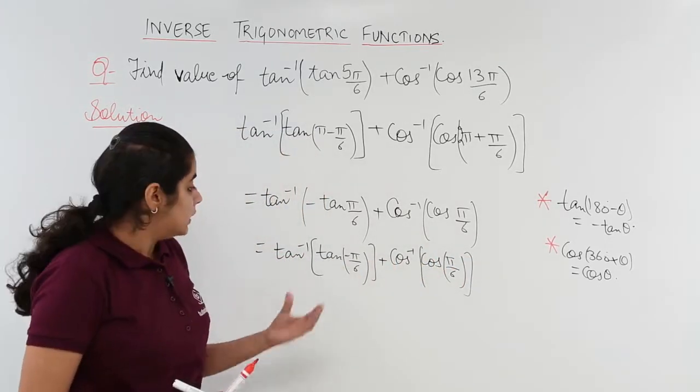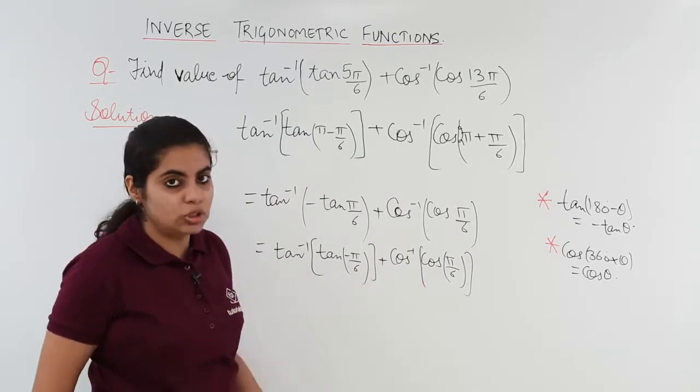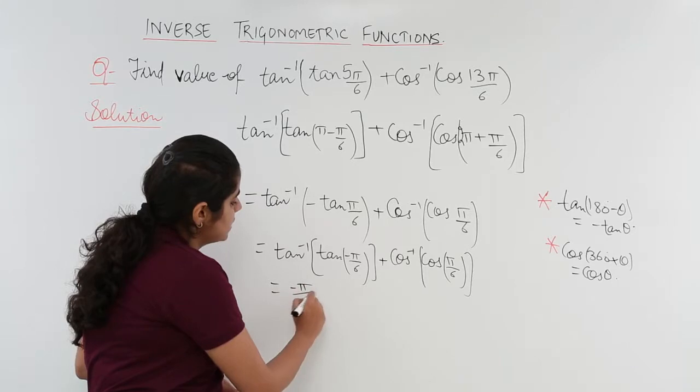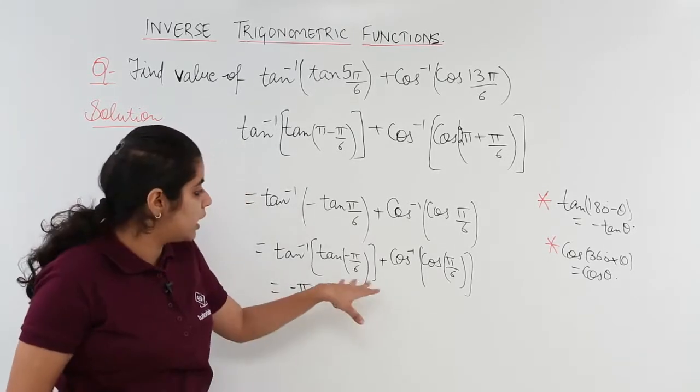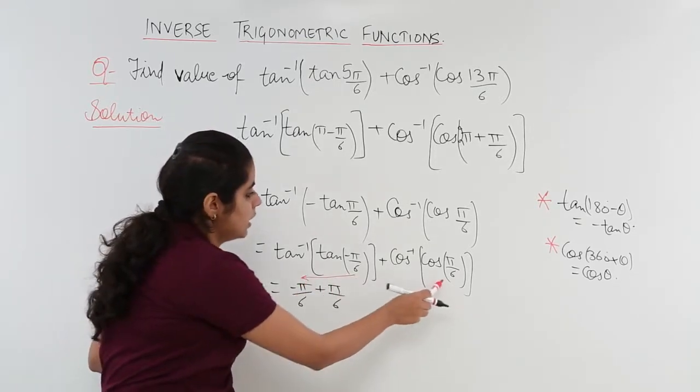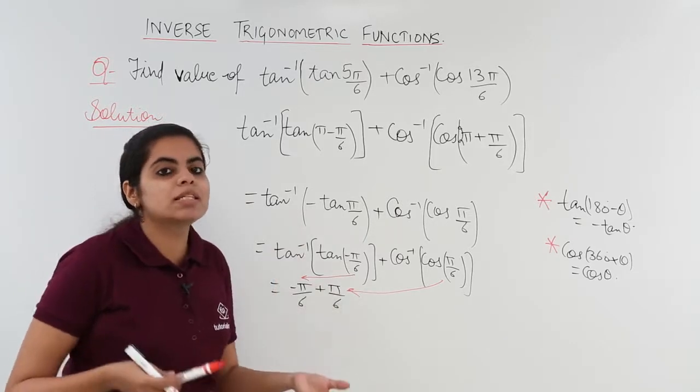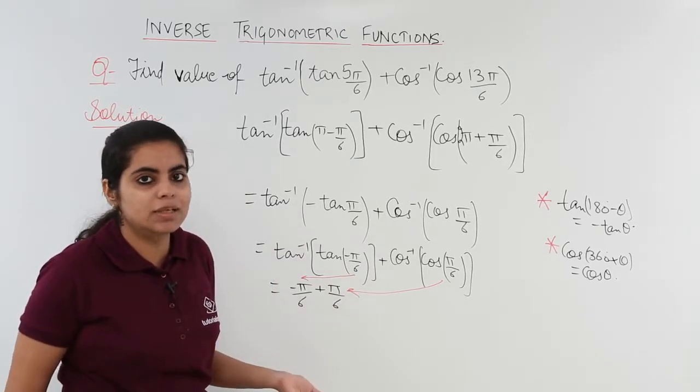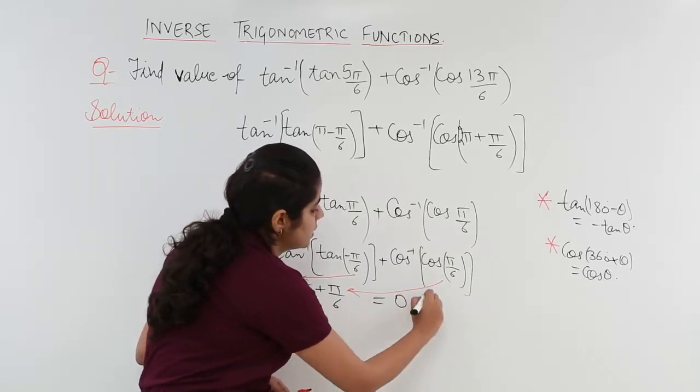Now it becomes tan inverse tan minus π by 6 plus cos inverse cos π by 6. Now tan inverse nullifies with tan, cos inverse cancels with cos. What we are left with is minus π by 6 plus π by 6. Minus π by 6 from here, plus π by 6 comes here. Now what happens? Minus something plus the same thing is nothing but 0. So the answer is 0. This is the answer.